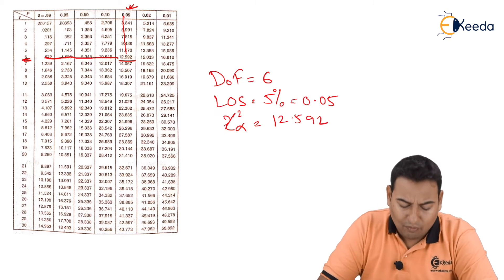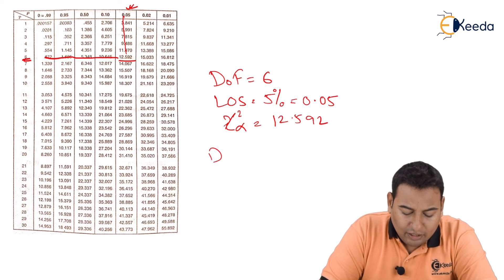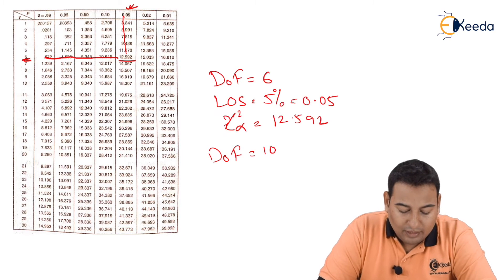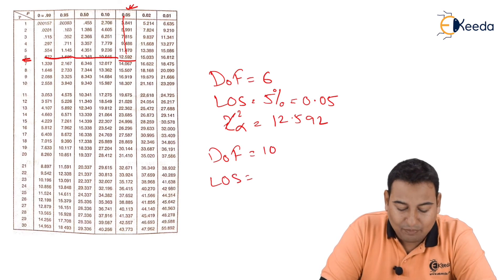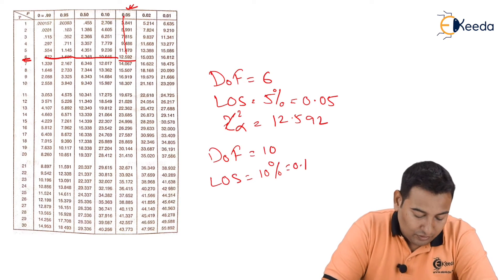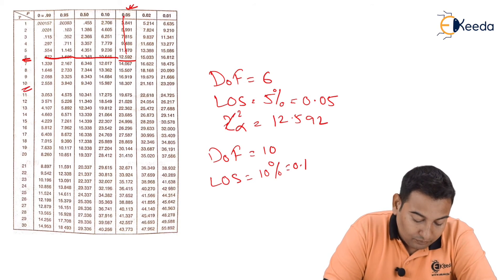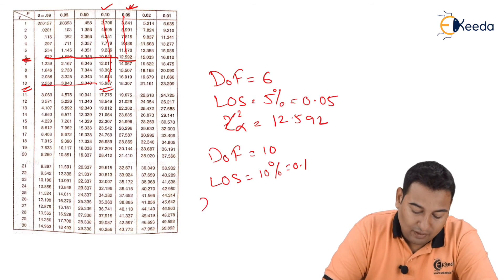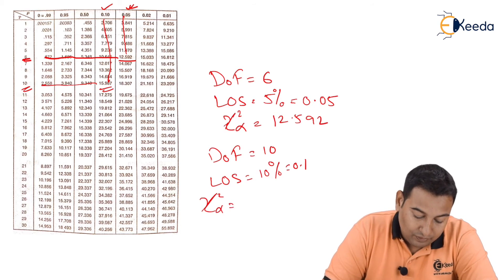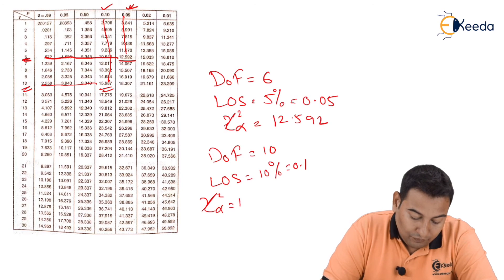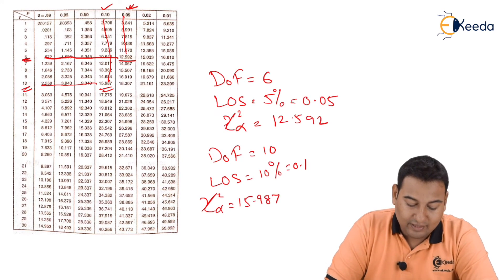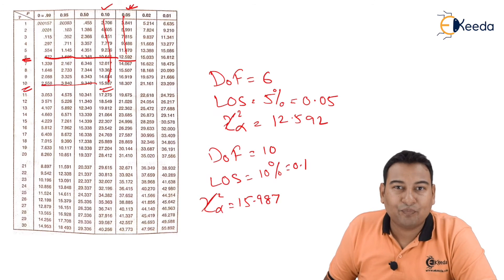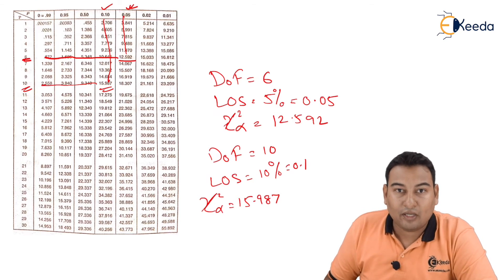Let's check out for one more value. Let's say 10 degree of freedom and suppose you have LOS as 10%. Ten percent means 0.1. So 10 degree of freedom, 10% LOS, this is the value. The value of chi-square alpha will be 15.987.